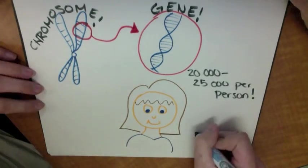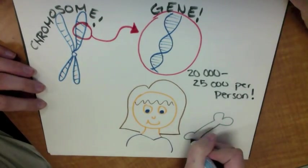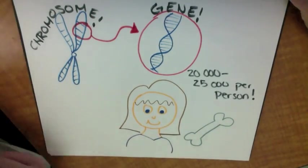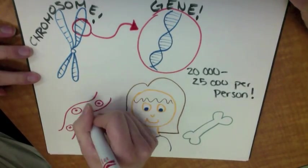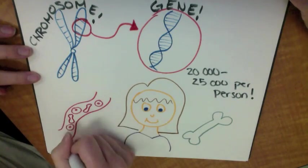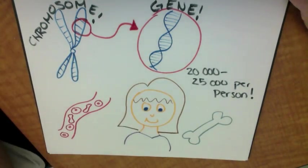You have a gene for everything about you, from how tall you are to the color of your skin, even the things you can't easily see, like your blood and bones.